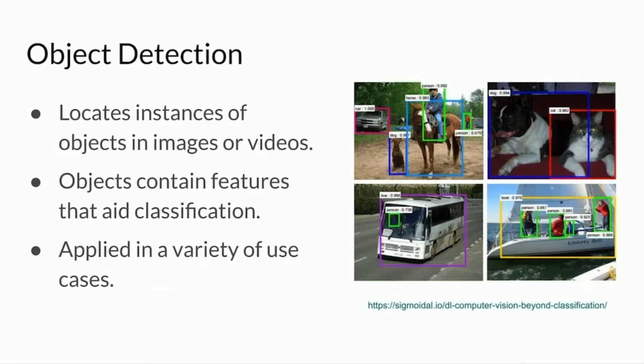In computer vision, which is a subset of machine learning that allows images and videos to be detected the way that humans can, techniques are developed to allow computers to understand image and video content similar to the way humans can. Object detection is a computer vision technique that leverages machine learning to locate instances of objects in images or videos. These objects contain features such as distance, shape, size, or color that help assign these objects to certain classes.